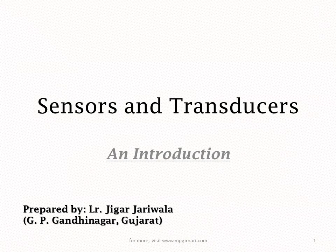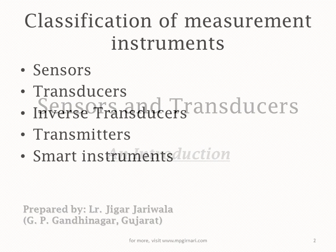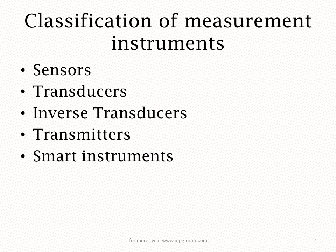Welcome students. This is a basic introductory lecture on sensors and transducers. First of all, let me introduce the measurement instruments. The instrument which is used to measure any physical or chemical quantity is called a measurement instrument. Measurement instruments are classified into various types: sensors, transducers, inverse transducers, transmitters, and smart instruments.